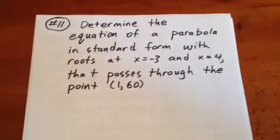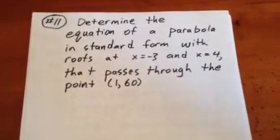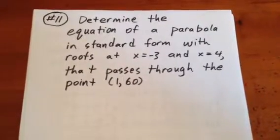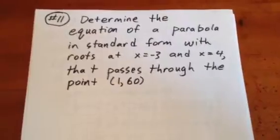This question asks us to determine the equation of a parabola in standard form with roots at x equals negative 3 and x equals 4 that passes through the point (1, 60).